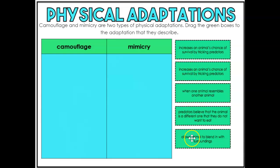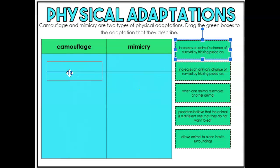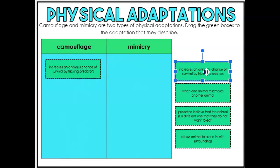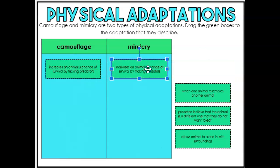First, we're gonna be organizing our options into the correct category. Please follow along with me in your Kik. The first one says: increases an animal's chance of survival by tricking predators. Now, that's kind of both of them — they both help trick predators into thinking that there's something that they're not. It's kind of like if a cupcake would disguise itself as a pile of dirt, something that we wouldn't want to eat.